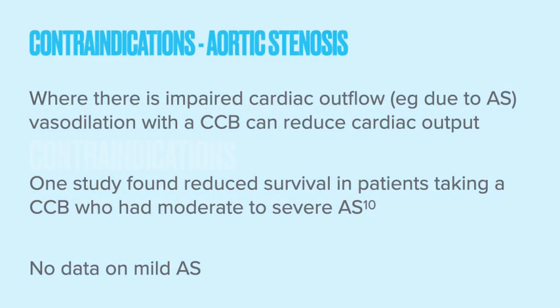We're now going to move on to contraindications. One of the most important — and one of the least often heeded — is the presence of aortic stenosis. If you've got impaired cardiac outflow due to aortic stenosis and you vasodilate the patient with a calcium channel blocker, you can get reduced cardiac output. There's good evidence showing that giving someone with moderate to severe aortic stenosis a calcium channel blocker resulted in worse mortality rates. For mild aortic stenosis, if you are going to prescribe one you really need annual echos and close monitoring. This means it's quite important before starting a calcium channel blocker to auscultate the heart and identify any obvious murmurs.